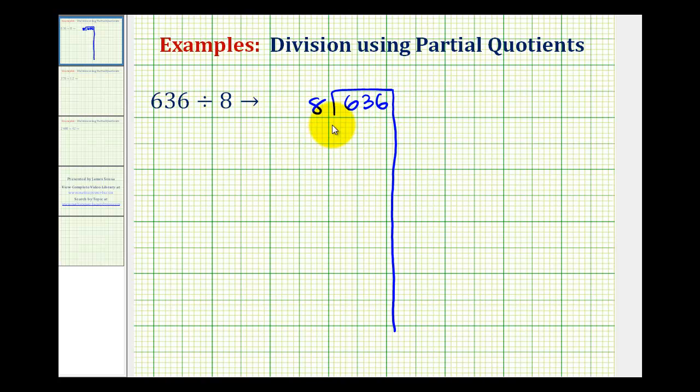So we'll start with a partial quotient of 50, which we'll put over here on the right. So again, 50 times eight is 400. Again we didn't have to use 50 over here, but the closer we are to 636 without being greater than 636, the less work we have to do.